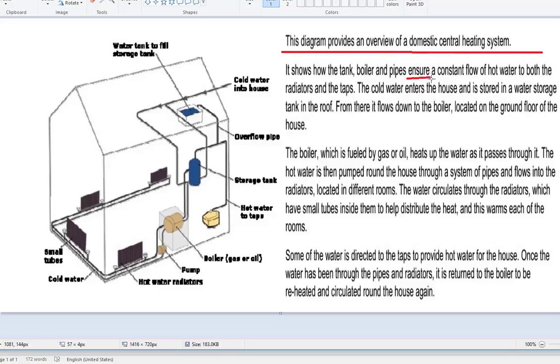Ensure constant flow of hot water. So here we have present tense being used to describe the flow of water. Cold water enters the house, so logically we start here. It's stored in a water storage tank. Next step, that's logical. It flows to the boiler. The boiler which is fueled by gas or oil, we see that from here. Heats the water as it passes through it. The hot water is then pumped around the house through a system of pipes. So pump, you see pipes. The water circulates through radiators located in different rooms. You can see that here. So this is a logical sequence to the writing.